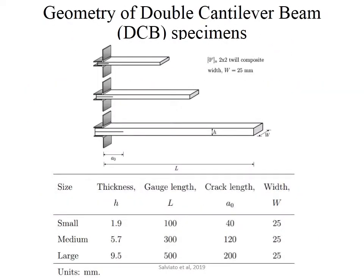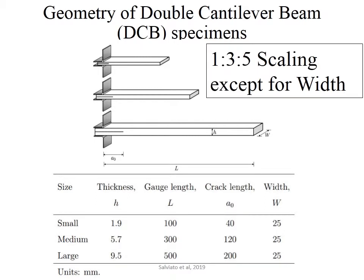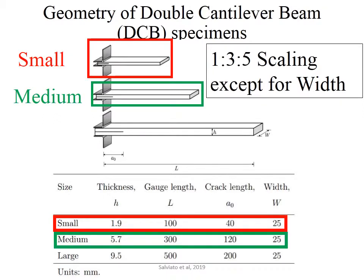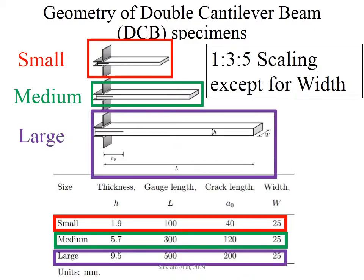This slide shows the dimensions of the 3 different size DCB specimens, which are scaled in a 2 to 3 to 5 ratio in all dimensions except width. Width is kept constant for all specimens. The first one is the small specimen, the second is medium, and the third is the large specimen.